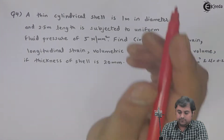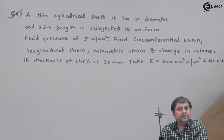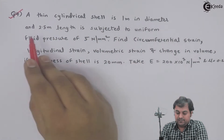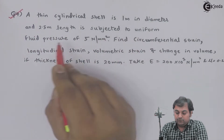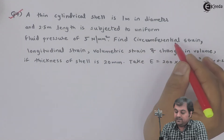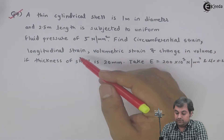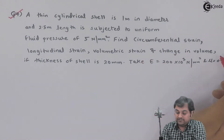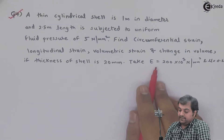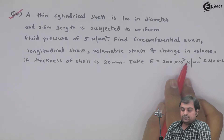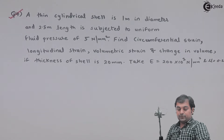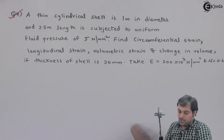Let us take the fourth question. What is given here: a thin cylindrical shell is 1 meter in diameter and 2.5 meter length, subjected to uniform fluid pressure of 5 Newton per mm square. Find circumferential strain, longitudinal strain, volumetric strain, and change in volume if thickness of the shell is 20 mm. Take E = 200×10³ N/mm² and mu = 0.25.